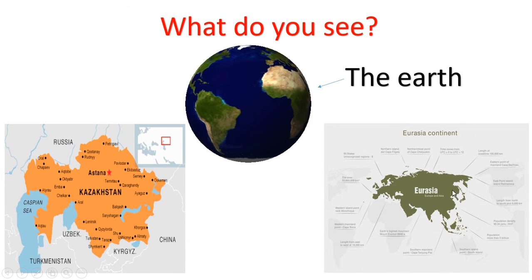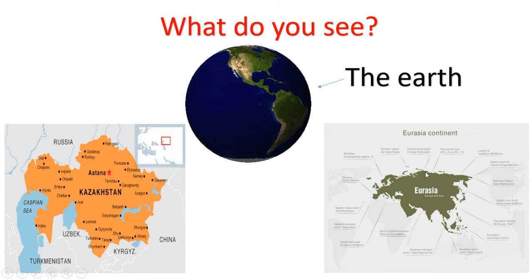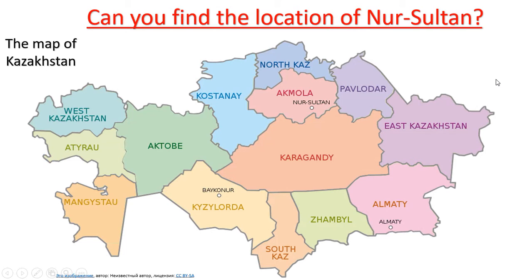In the Eurasia continent, you can find our country. Look at the next slide. This is the map of Kazakhstan. Can you find the location of Nur-Sultan on this map? Where is it situated? Yes, here it is — in the Akmola region.